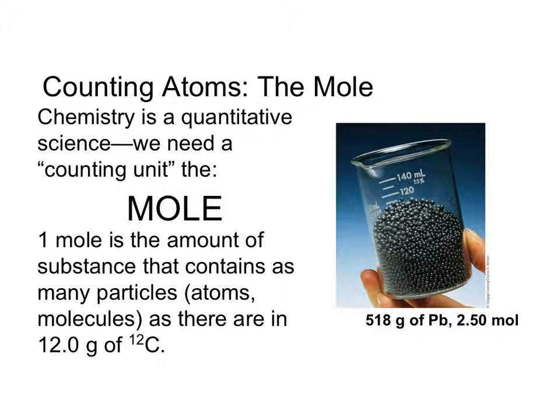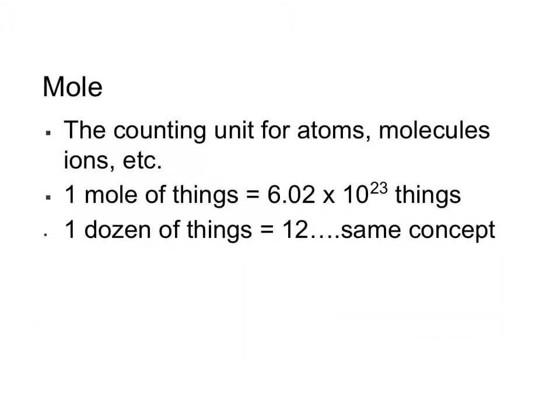For that we use what we call the mole. The technical definition of a mole is that one mole is the amount of a substance that contains as many particles as there are in 12.0 grams of carbon-12. This leads us to thinking of the mole as simply a counting unit for small things such as atoms, molecules, and ions. A mole of anything is simply equal to 6.02 times 10 to the 23rd of that thing. This is the same as saying one dozen of something equals 12 of that thing — it's the same exact concept.